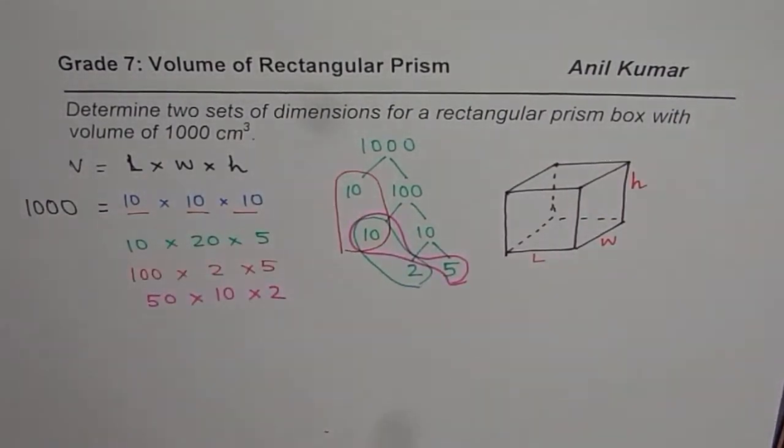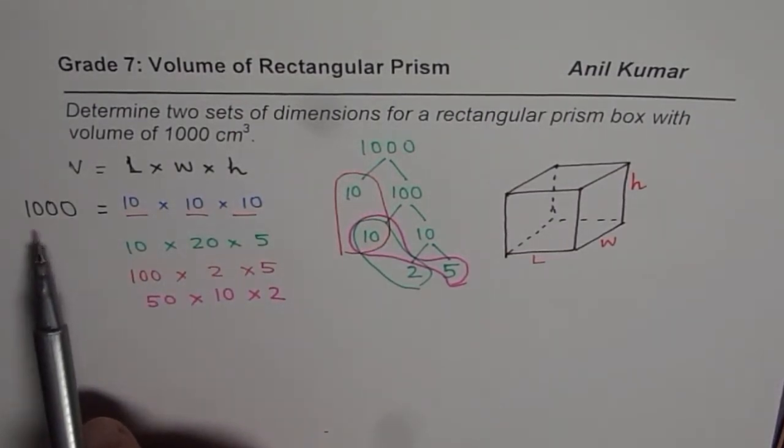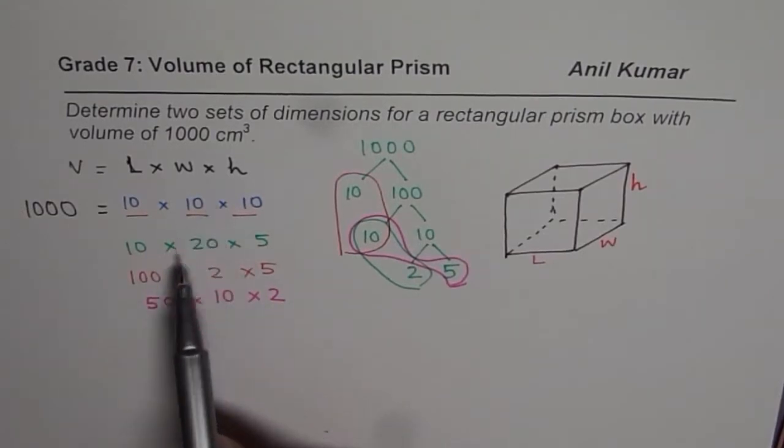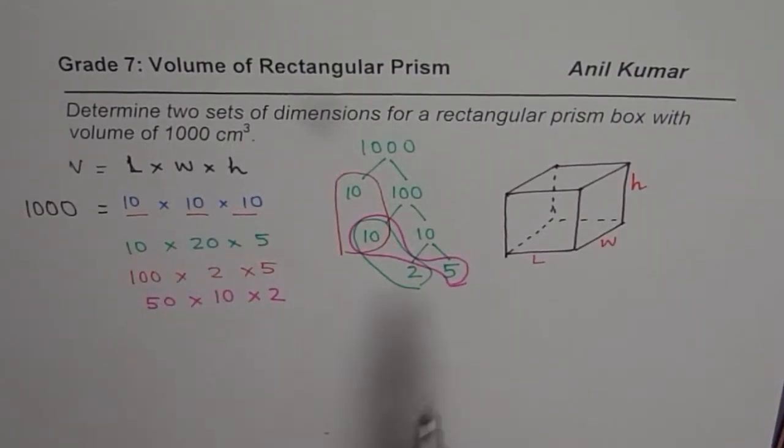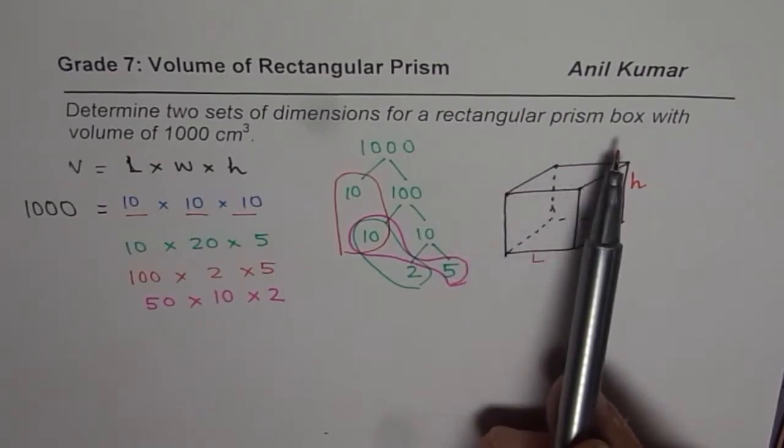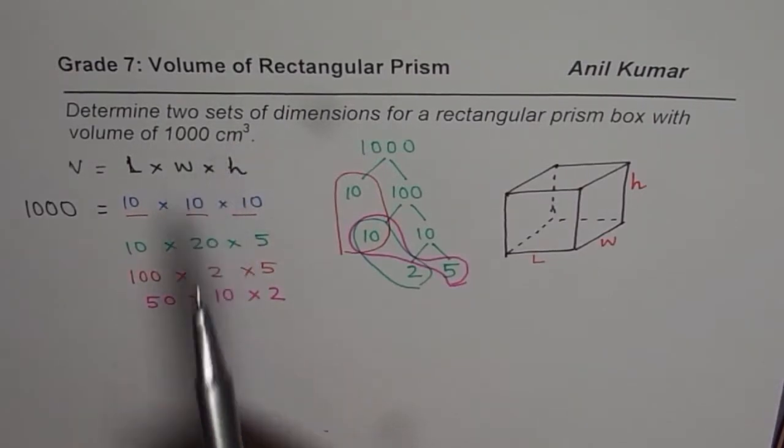So you could use your calculator to check that all these values. So that is how we could get so many different combinations for making a rectangular prism box with a volume of 1000 centimeter cube.